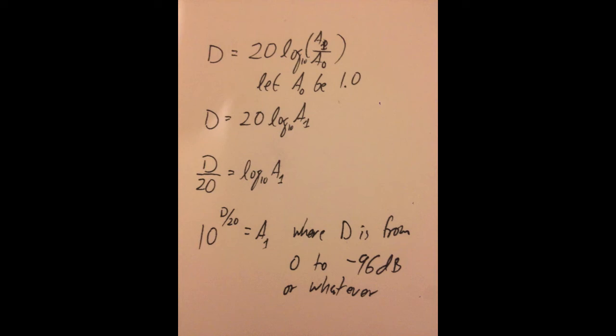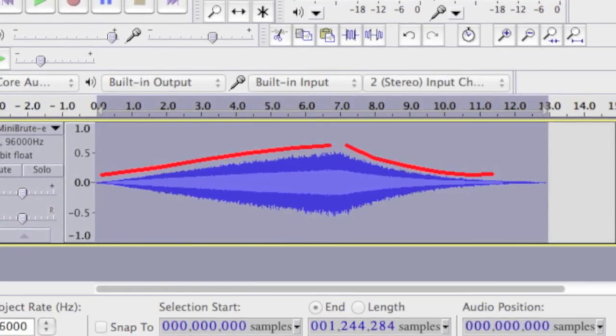And it's easy to say, well, I want this to decay from minus five dB to minus 40 dB or something this way. Because you know what indices that those are in your table. And that's pretty much all there is to it.